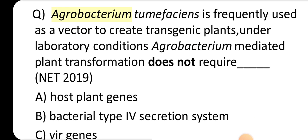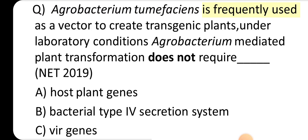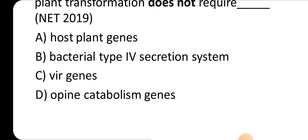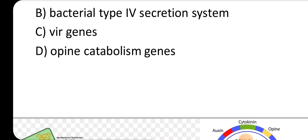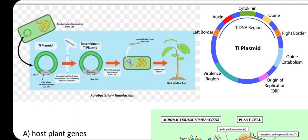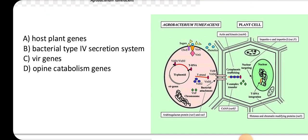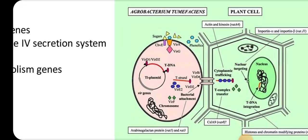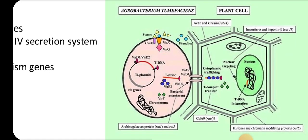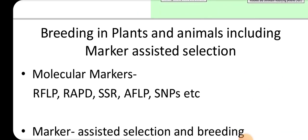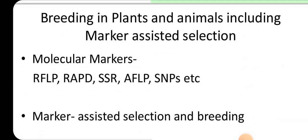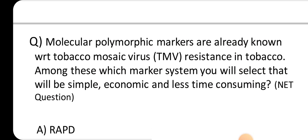Agrobacterium tumefaciens is frequently used as a vector to create transgenic plants under laboratory conditions. Agrobacterium-mediated plant transformation does not require ___________. NET 2019. A. Host.